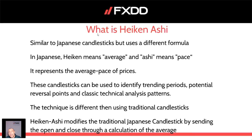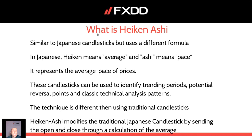You will always see that the price of Heiken Ashi candlesticks is lagging a little bit behind traditional Japanese candlesticks. That is because there is a formula within Heiken Ashi that gives them different colors — they are color-coded. They are usually used to identify trending periods, potential reversal points, and classic technical analysis patterns. The technique is totally different than using traditional candlesticks and should not be confused with standard Japanese candlesticks or standard bar charts. Heiken Ashi modifies standard Japanese candlesticks by sending the open and close through a special calculation of the average.